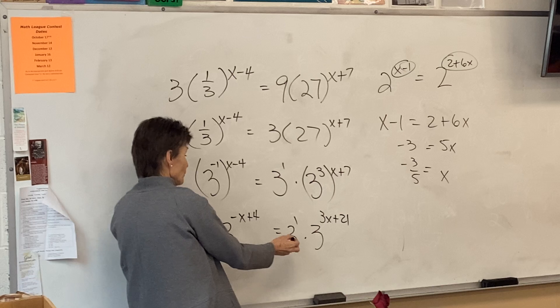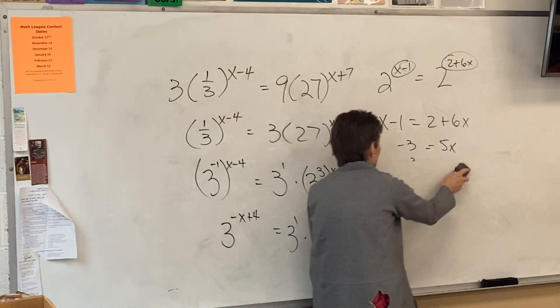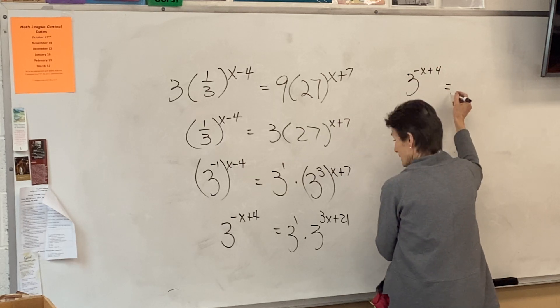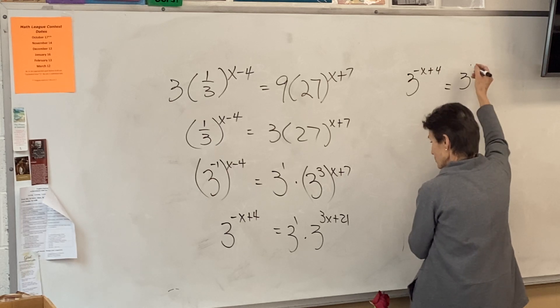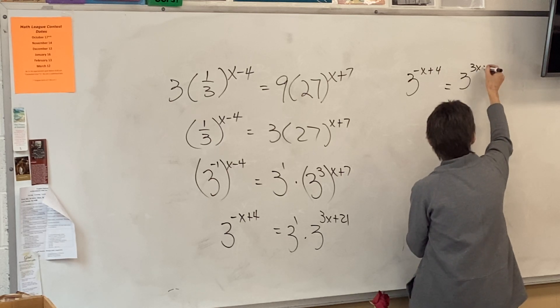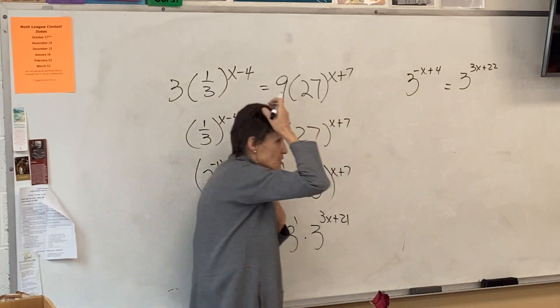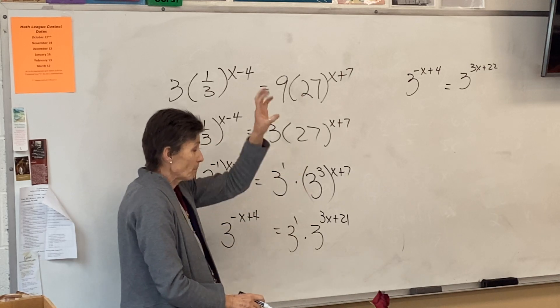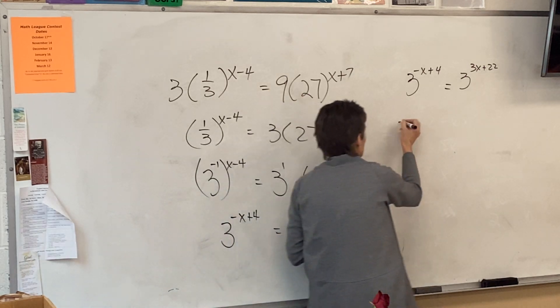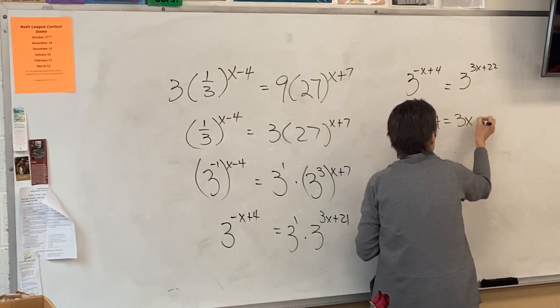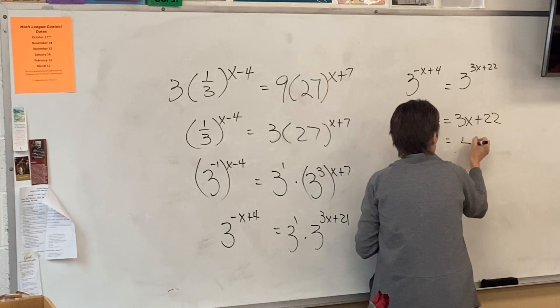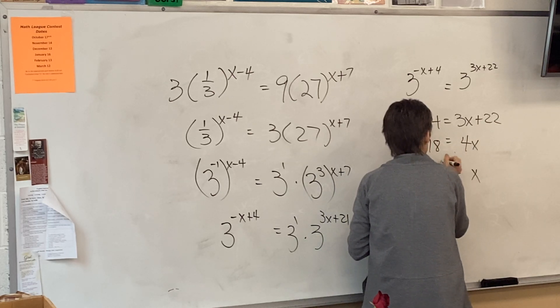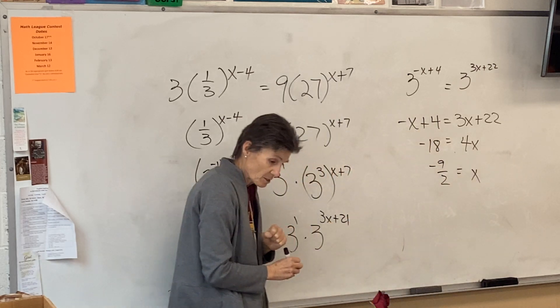And then this is going to be 3 to the 1st times 3 to the 3x plus 21. And then what do I do when I have a 3 times a 3? Add them. So I have 3 to the negative x plus 4 equals 3 to the 3x plus 22. And as soon as I get something that looks like that, I can just set them equal to each other and solve it. So it looks like 4x equals negative 18.